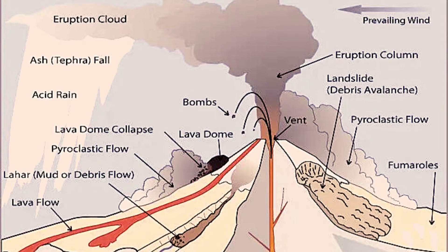Acid rain: when sulfur dioxide and nitrogen oxide emitted from volcanoes react with water molecules in the air, it produces acid rain. Pyroclastic flow: this type of deadly flow contains fast-moving volcanic matter and hot gas. Pyroclastic flow moves away from a volcano and incorporates tephra. When lava domes collapse, it can create hot pyroclastic density currents.